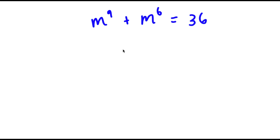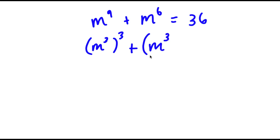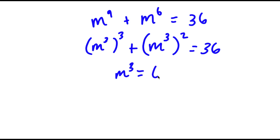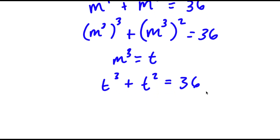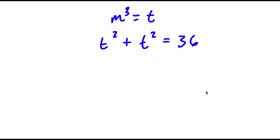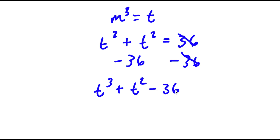In this problem, I have m to the power of 9 plus m to the power of 6 is equal to 36. First we rewrite m to the power of 9 as m to the power of 3 to the power of 3, and then m to the power of 6 as m to the power of 3 to the power of 2, and this is equal to 36. Now I'm going to let m to the power of 3 equal the variable t. So now I have t to the power of 3 plus t squared is equal to 36. If I subtract 36 on both sides, now I have t to the power of 3 plus t squared minus 36 is equal to 0.